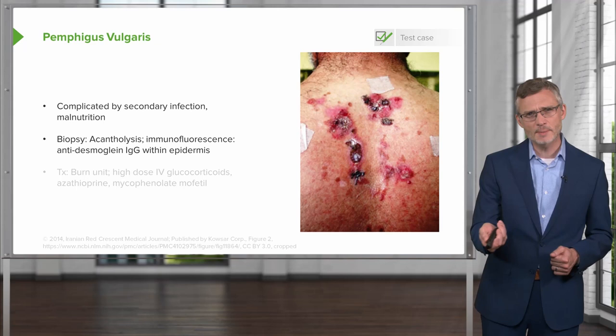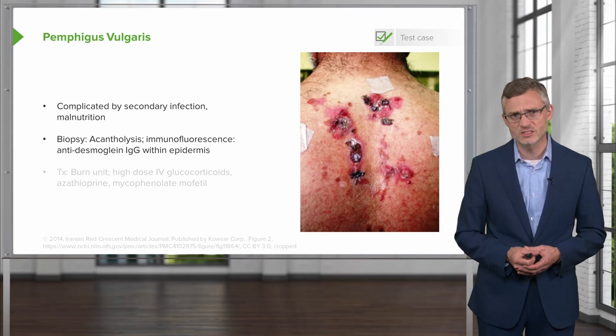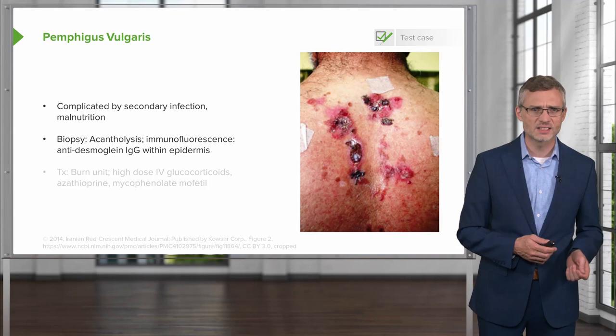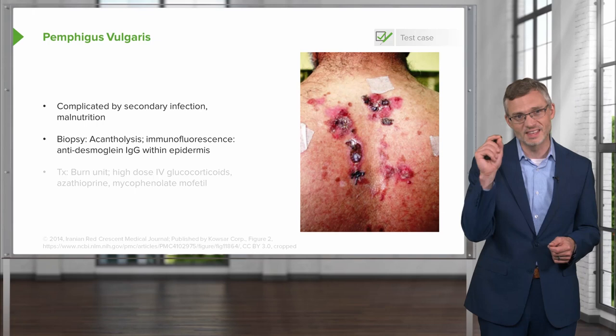If you were to biopsy any one of these lesions — and that is often recommended to ensure you have the right diagnosis — you'll see acantholysis, which simply means separation and peeling apart of the different keratinocytes in the skin. Immunofluorescence will identify those anti-desmoglein antibodies right within the epidermis, rather than at the epidermis-dermis junction.